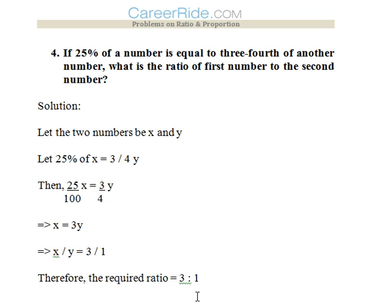So 25 percent of the first number is three-fourth of the another number. So 25 percent of x would be 3/4 of y. So 25/100 x is equal to 3/4 y. So we get the ratio as x/y is equal to 3/1. That is 3 is to 1 would be the answer.